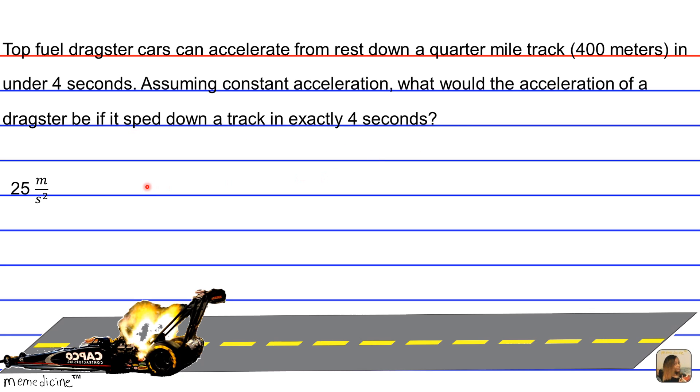Would it be A, 25 meters per second? B, 100 meters per second? C, 75 meters per second? Or D, 50 meters per second?